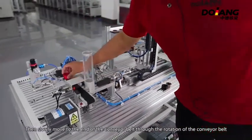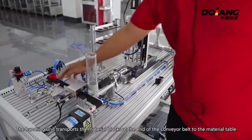Then, the materials slowly move to the end of the conveyor belt through the rotation of the conveyor belt.